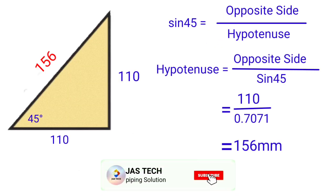This is 45 degree lateral. So sin 45 equals opposite by hypotenuse. Hypotenuse equals opposite by sin 45. As per our triangle, opposite side equals 110. Sin 45 equals 0.7071. So the answer is 156mm.